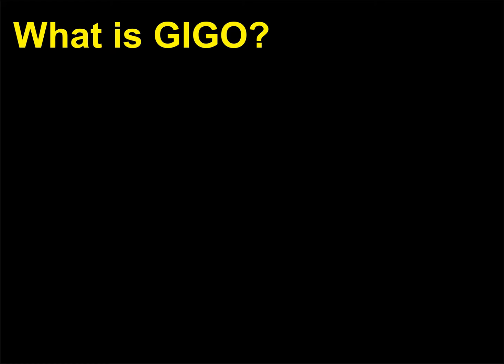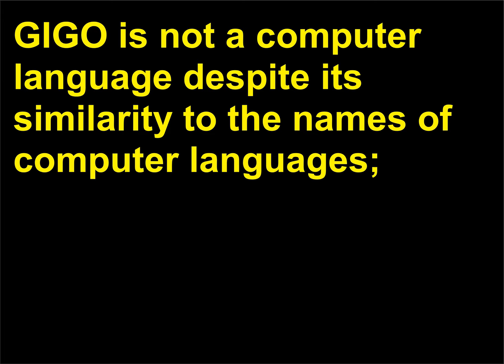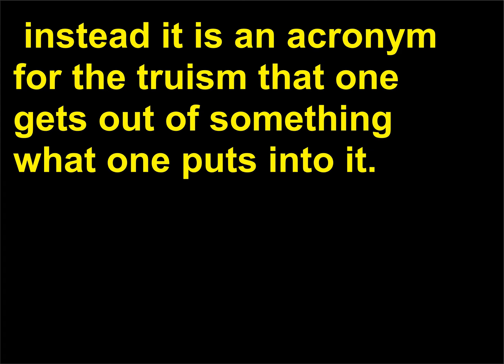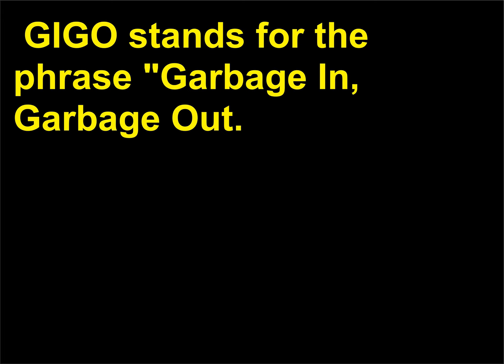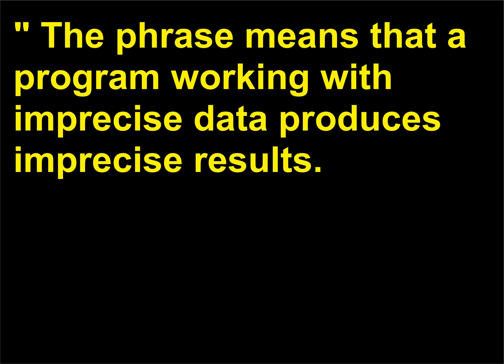What is GIGO? GIGO is not a computer language despite its similarity to the names of computer languages. Instead, it is an acronym for the truism that one gets out of something what one puts into it. GIGO stands for the phrase "garbage in, garbage out." The phrase means that a program working with imprecise data produces imprecise results.